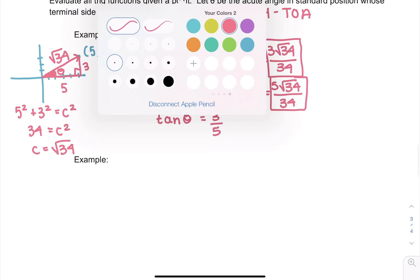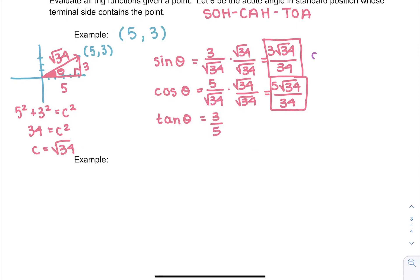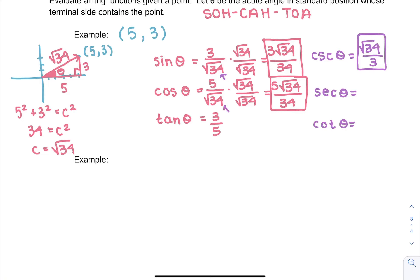Now for the other three trig functions. Cosecant of theta is just sine flipped — use the non-rationalized form first so the square root ends up in the numerator: square root of 34 over 3. Secant of theta — flip cosine — gives square root of 34 over 5. Cotangent of theta — flip tangent — gives 5 over 3.